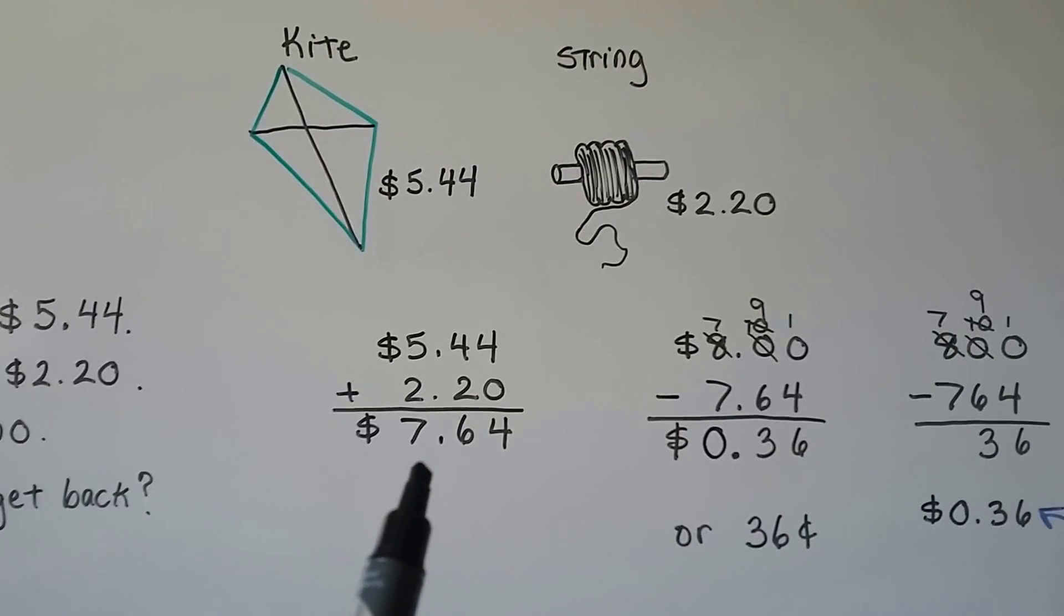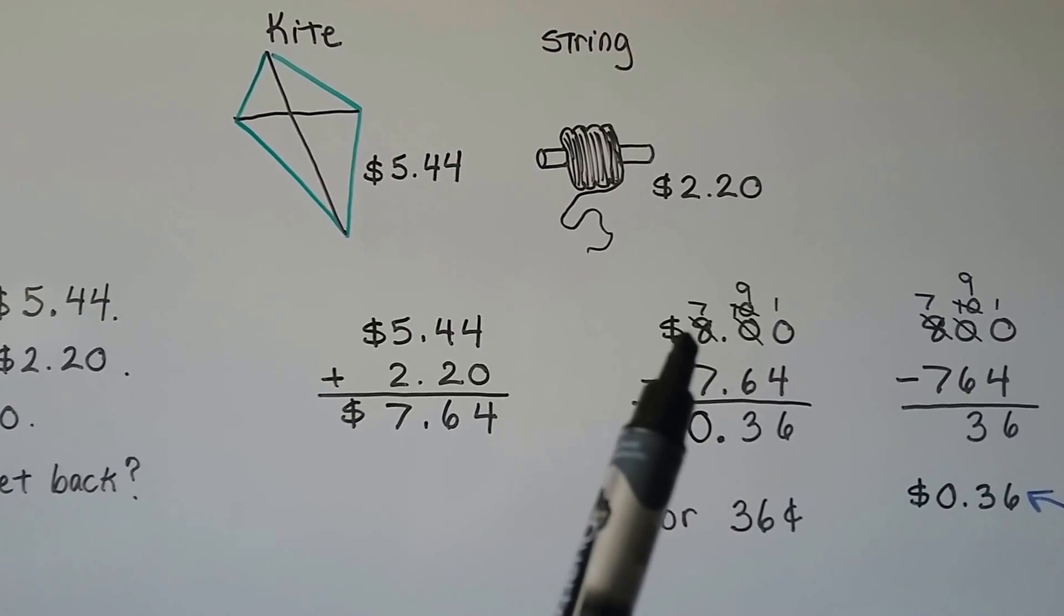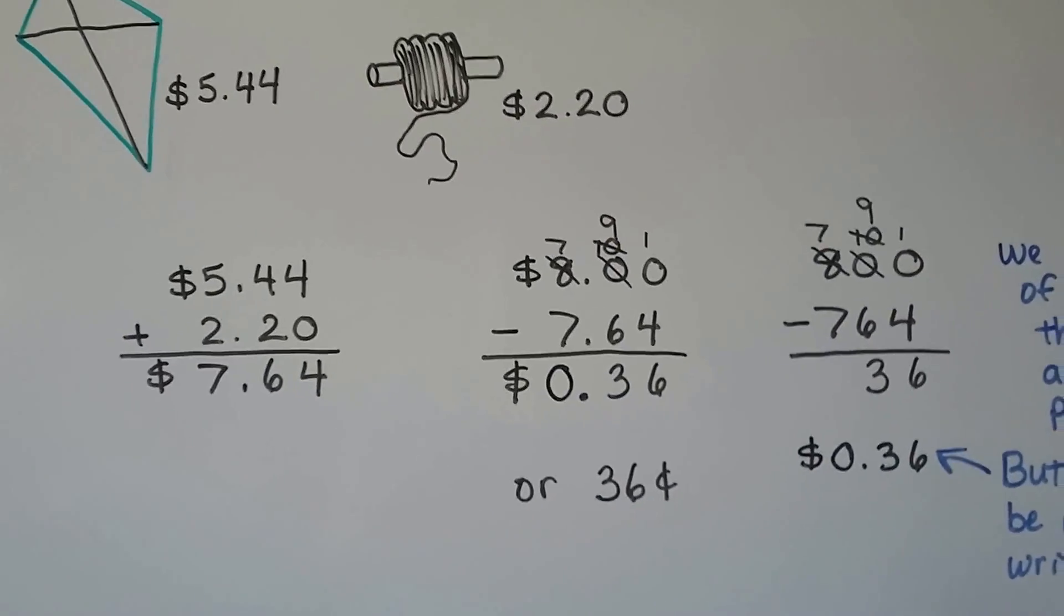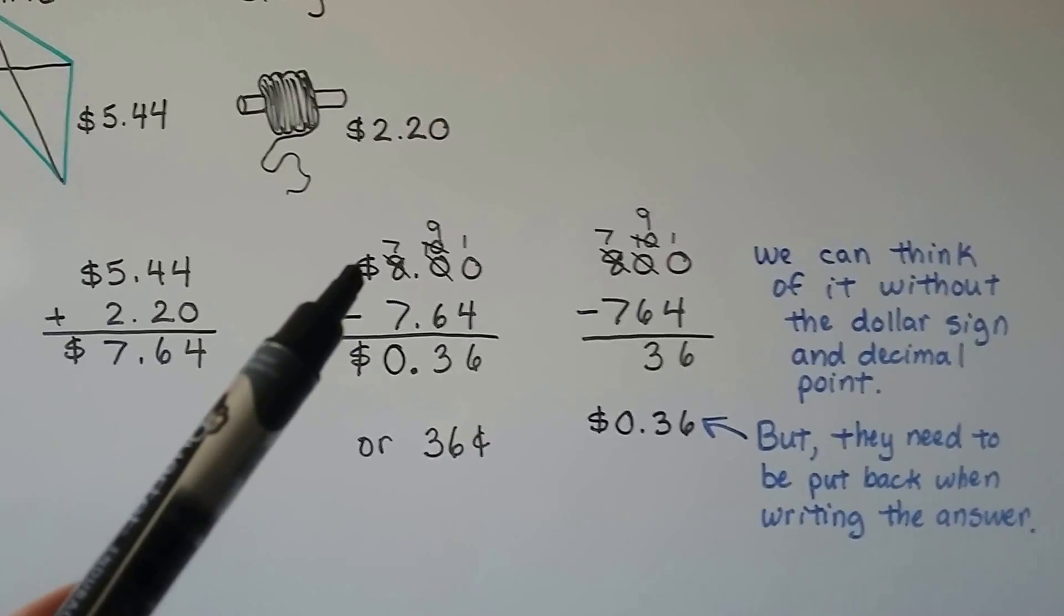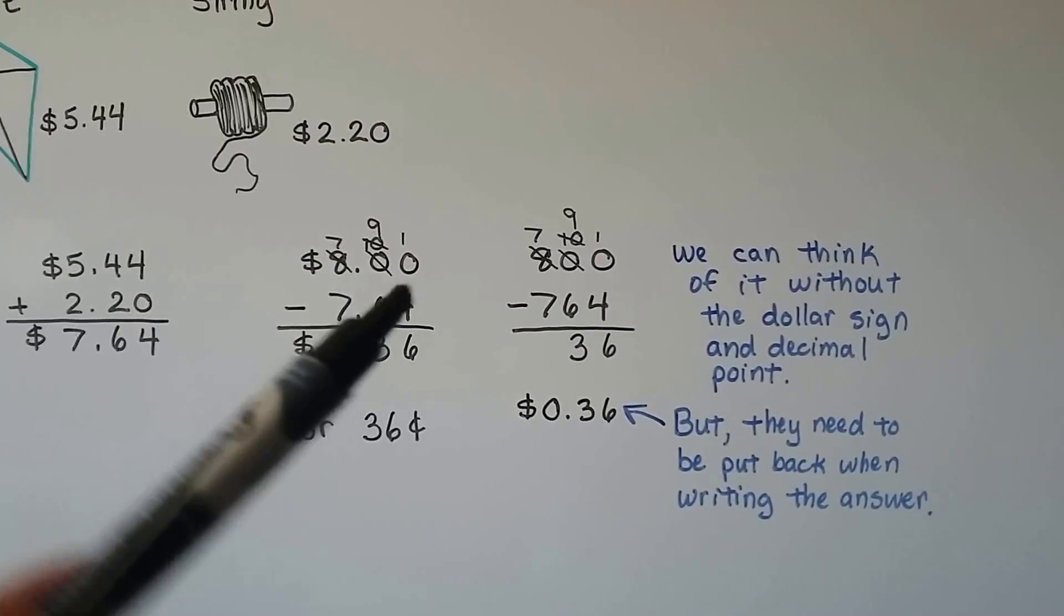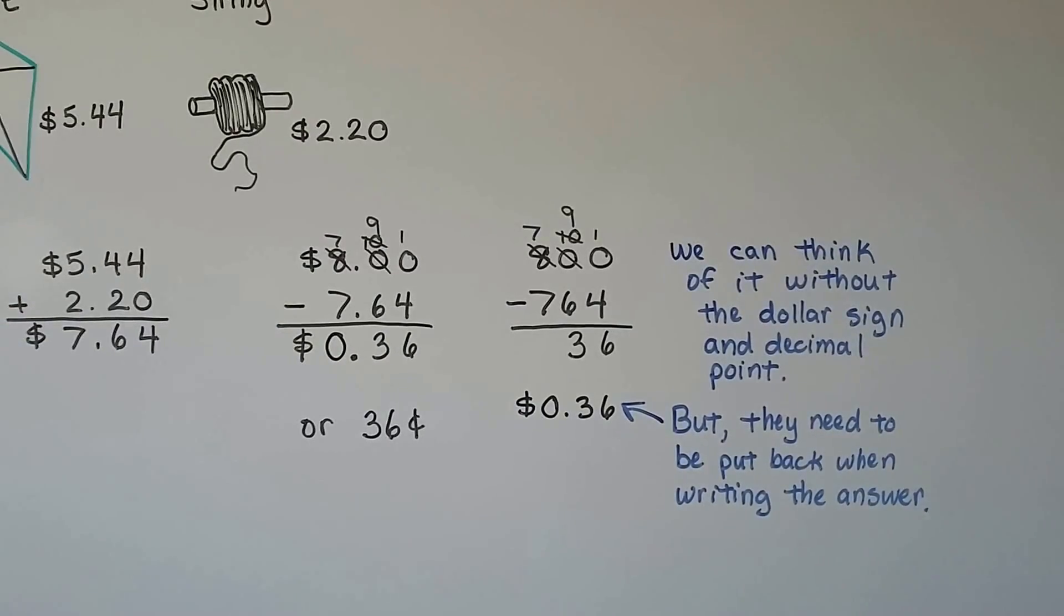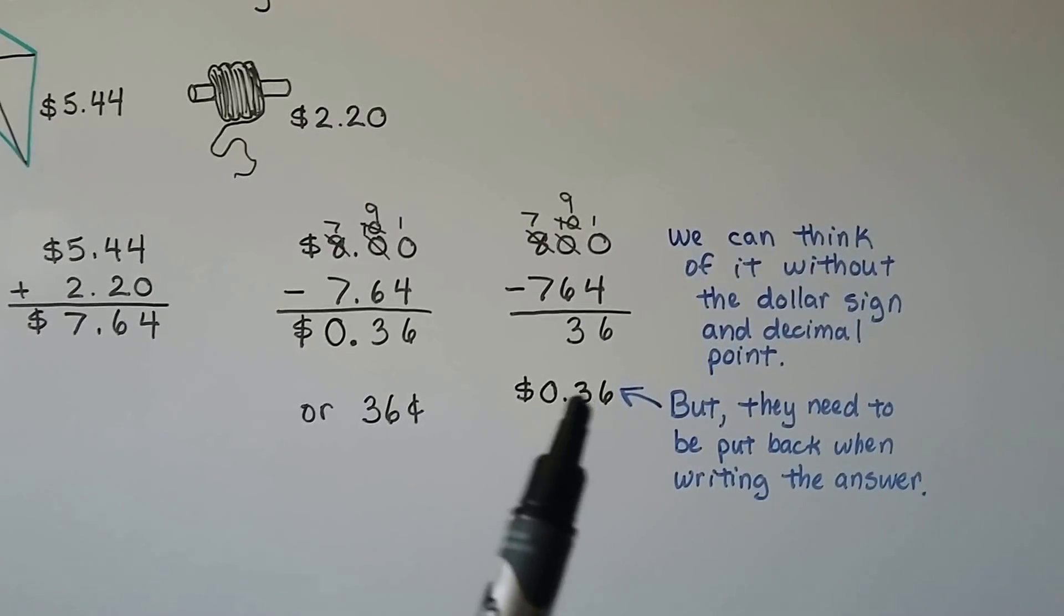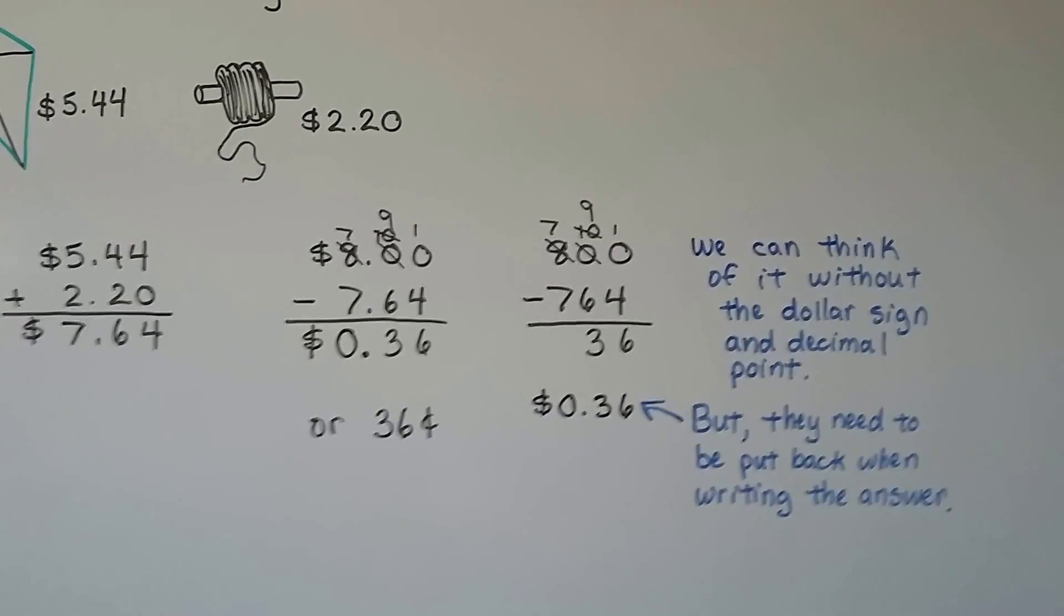And she gave the clerk $8. So, we're going to subtract this amount from the $8 to find the difference, and that will be her change. When we subtract the $7.64 from the $8, we can think of it without the dollar signs as 800 minus 764. But we need to put the decimal point and the dollar sign back on when we're finished doing our subtraction or addition.